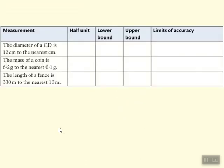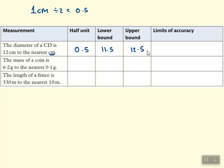To summarize the method: the diameter of a CD is 12 centimetres to the nearest centimetre. 'Nearest centimetre' means nearest 1 centimetre, so divide 1 by 2 to get the half unit of 0.5. Lower bound: 12 − 0.5 = 11.5. Upper bound: 12 + 0.5 = 12.5. So using the letter d for diameter: 11.5 ≤ d < 12.5.